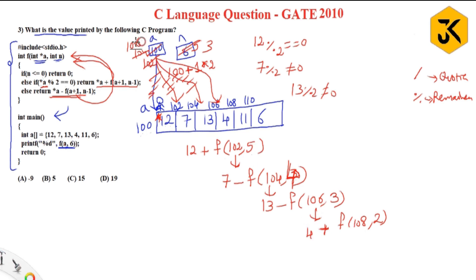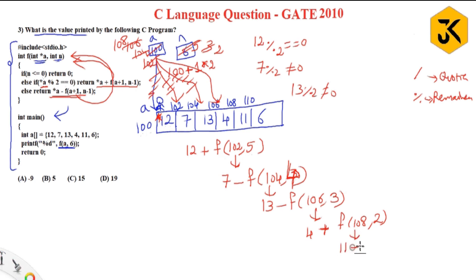Now a is 108, n is 2. Is n <= 0? No. Star a: address 108, star a is 11. Is 11 % 2 == 0? No, not equal to 0. So it executes the else case: return star a minus f(a+1, n-1), that is 11 minus f(110, 1). Now 108 is replaced with 110, pointing to that element.